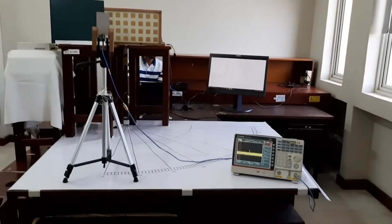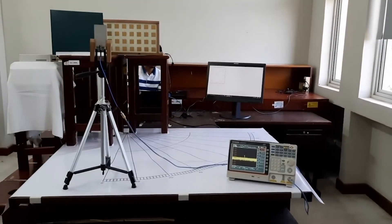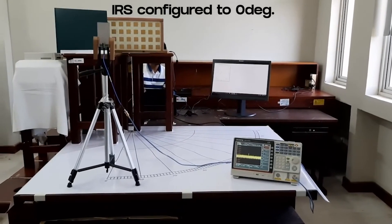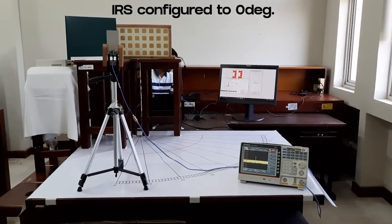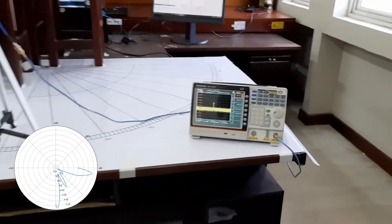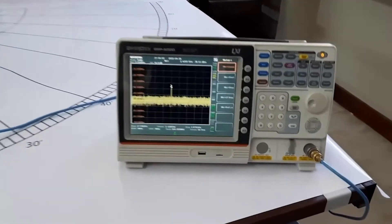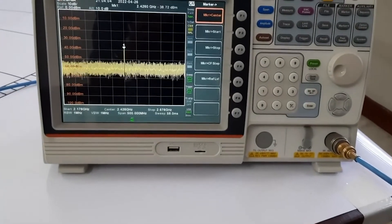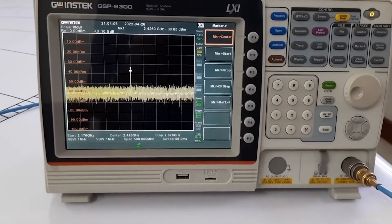And now we change the configuration of the IRS to direct the beam to zero degrees direction. Now you can see there is an increase of the spike at 2.42 GHz frequency level, and the power level goes up to around minus 38 dBm.